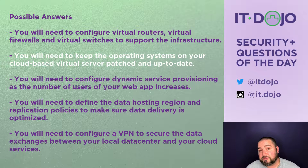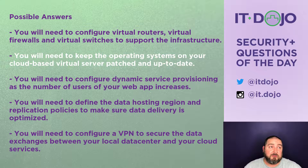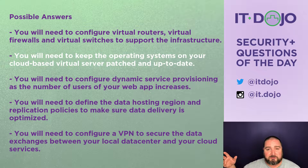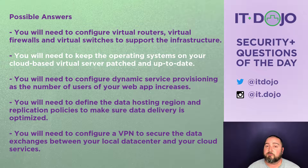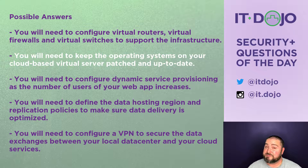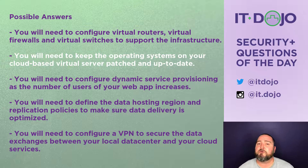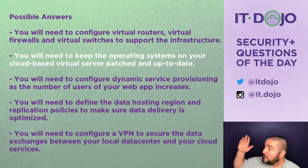The third option says you'll need to use dynamic service provisioning to scale your app as the number of users increases. That falls more into a platform as a service discussion — where you're deploying a web app entirely in the cloud with no actual infrastructure to deal with — so while interesting, it doesn't relate to this question. The next option says you need to define a data region and delivery options to ensure optimized data delivery, which relates more to a content delivery network. That focuses on data storage and optimized delivery, not the server itself, so that's also not the right answer.